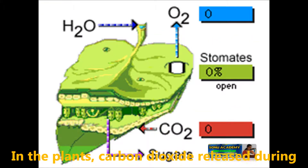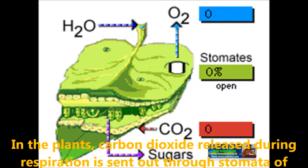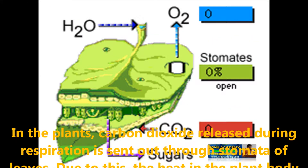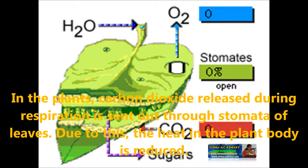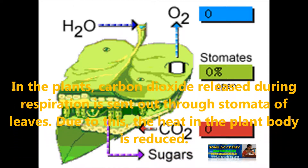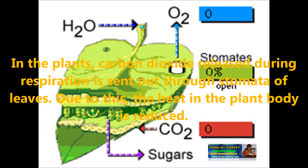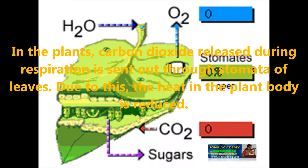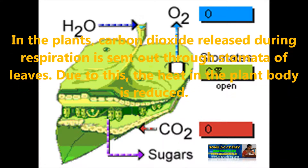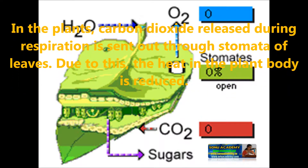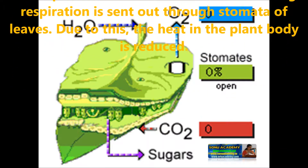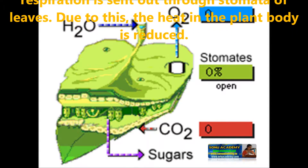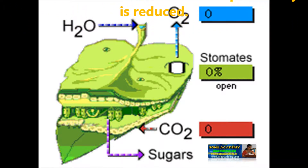In plants, carbon dioxide released during respiration is sent out through the stomata of leaves. Plants discharge the excess of water in the form of water vapour during transpiration by leaves. Due to this, the heat in the plant body is reduced.